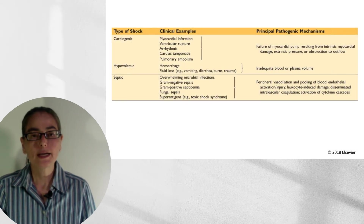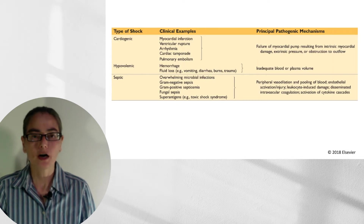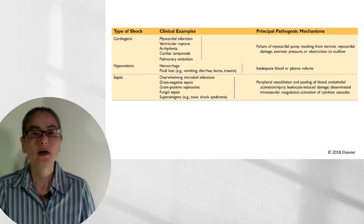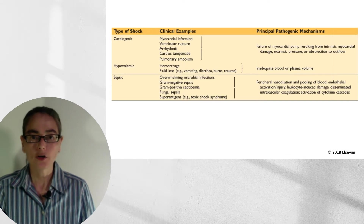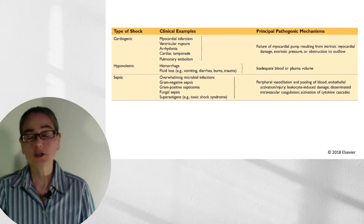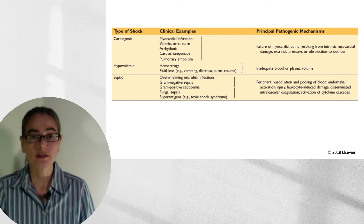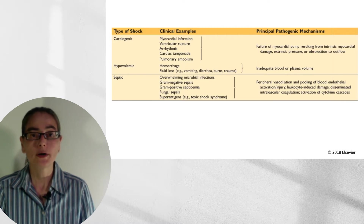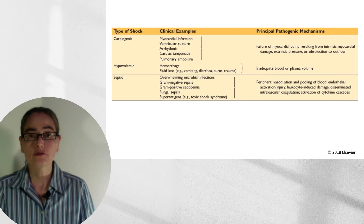This is a table from Robbins Basic Pathology, 10th edition, which goes through the three types of shock, gives some clinical examples, and the principal pathogenic mechanisms. Cardiogenic shock can occur with myocardial infarction, ventricular rupture, arrhythmia, cardiac tamponade, or pulmonary embolism — all of which lead to failure of the myocardial pump.